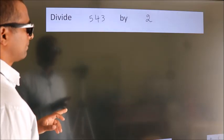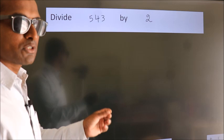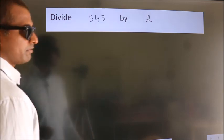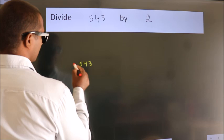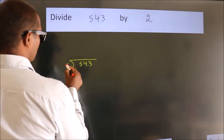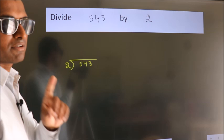Divide 543 by 2. To do this division, we should frame it in this way. 543 here, 2 here. This is your step 1.